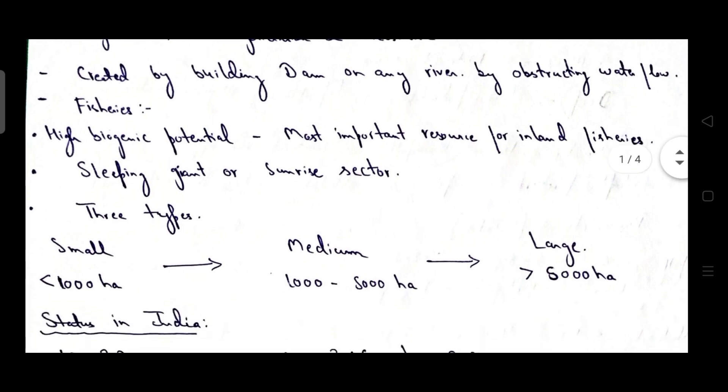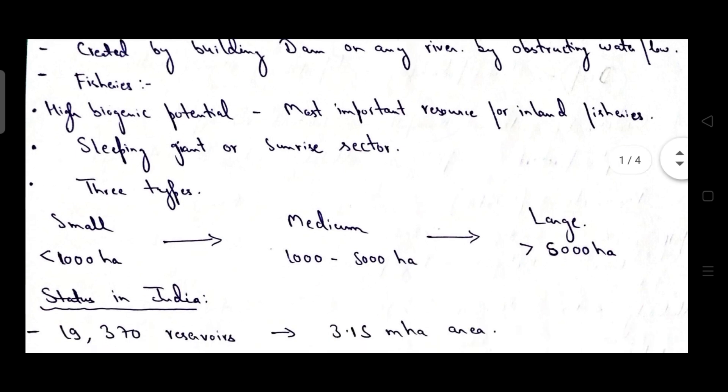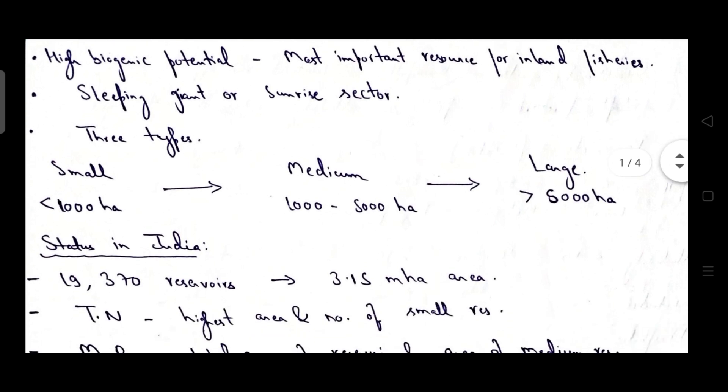Then they have high biogenic potential, most important resource for inland fisheries. They are also termed as sleeping giant or sunrise sector for fisheries, as they have huge biogenic potential or productivity potential but at present they are lagging behind. But we expect that in near future the reservoir will contribute more and more to the production of fisheries sector. That's why they are termed as sleeping giant or sunrise sector.